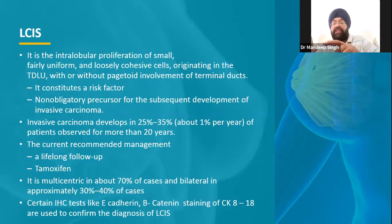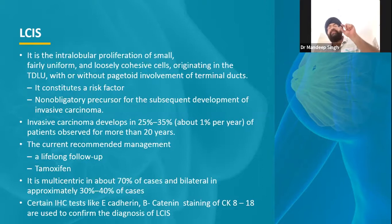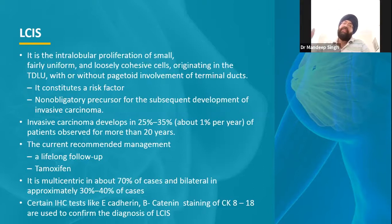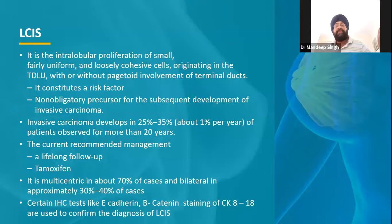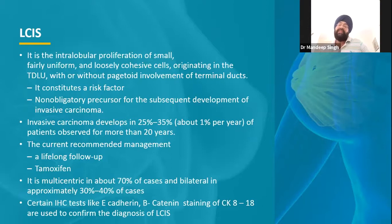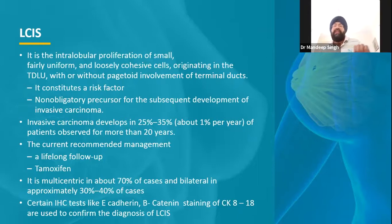Another important feature of lobular carcinoma is multifocality. In ductal malignant process, there is usually one single focus in one breast. In lobular carcinoma, there may be multiple foci in one breast, and there is a 30% probability that the same malignant process is occurring in the other breast. In ductal cancer, the chances of a cancerous process in the other breast are around 5% or less. Lobular is less aggressive and doesn't spread very fast, but has multiple sites of origin.